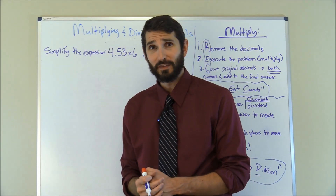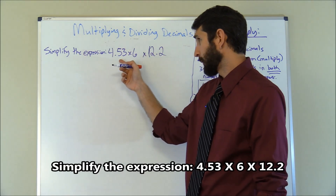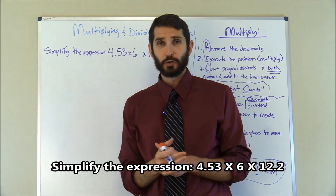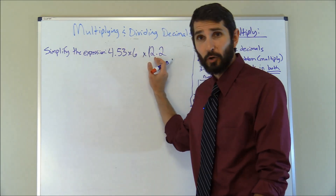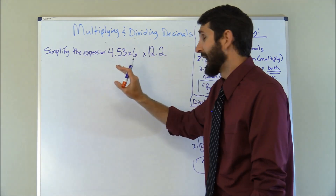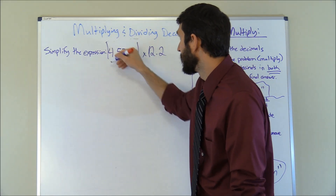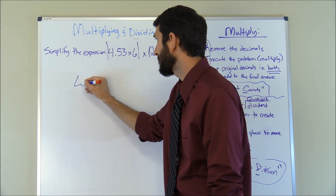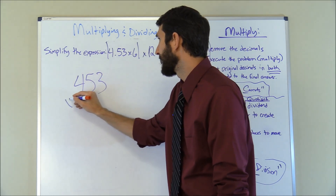Let's work another multiplication problem: simplify the expression 4.53 times 6 times 12.2. Following our mnemonic, we first remove the decimals. Since this has three parts, it's easier to multiply two numbers first, get an answer, and then multiply that by the third number. So we'll focus on 4.53 times 6 first. Removing the decimal, that becomes 453 times 6.